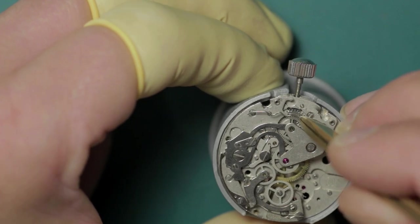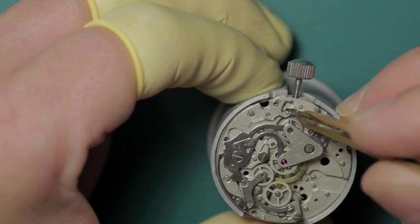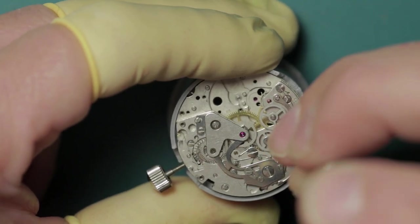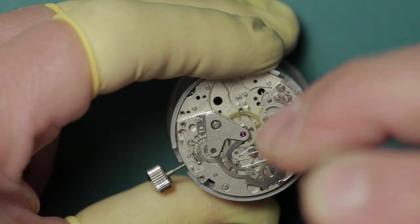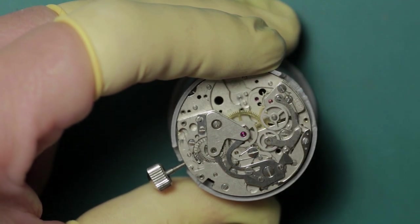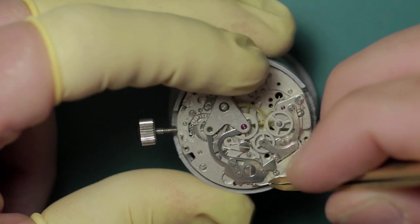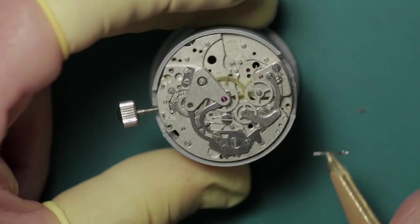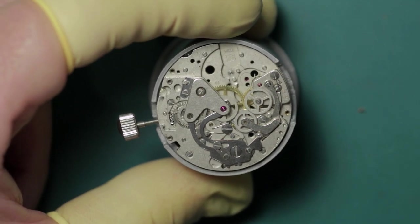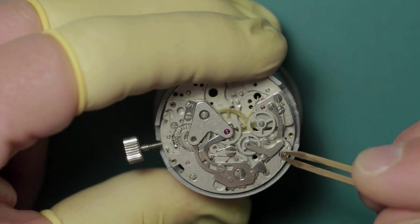Next we move on to the hammers and we remove the hammer jumper, the hammer spring which is held in place by a single screw, followed by the hammers themselves which are held by a single large central screw.